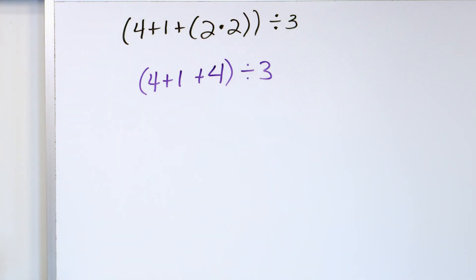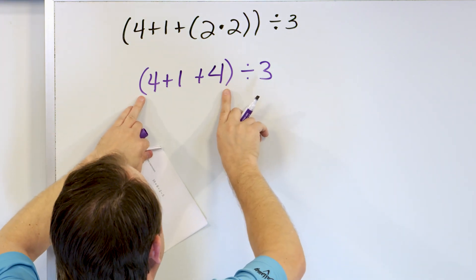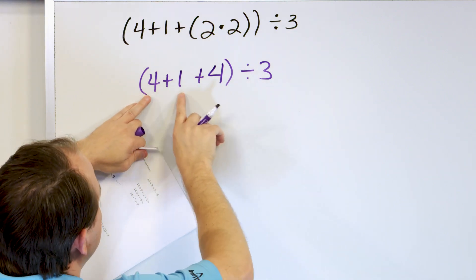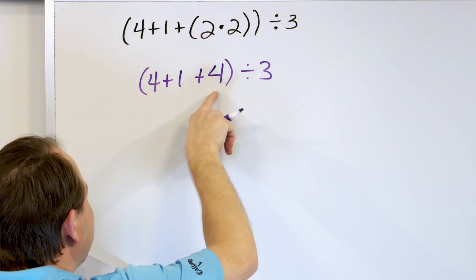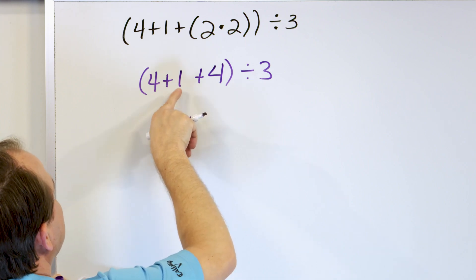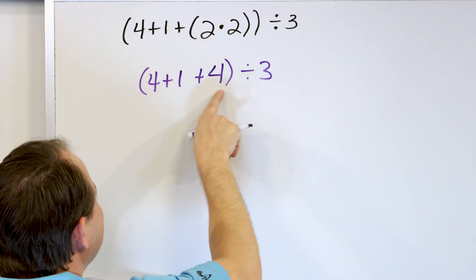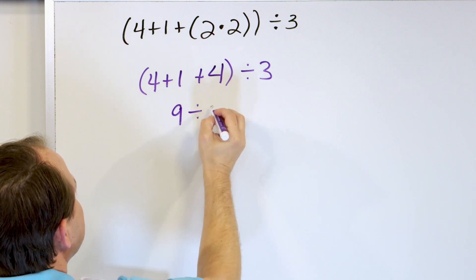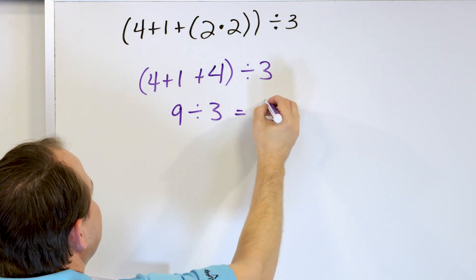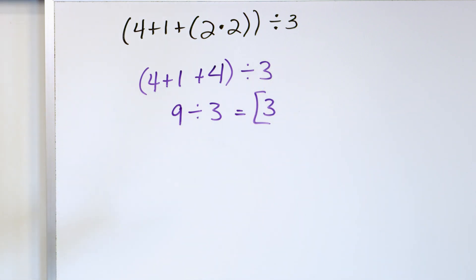All I've done is the multiplication inside the innermost parentheses — everything else is rewritten. Now we still have the outer parentheses, so we do what's inside first. We have a bunch of additions, so we go left to right: 4 plus 1 is 5, and then 5 plus 4 is 9. So this all becomes 9 divided by 3. 9 divided by 3 is 3, and that is the final answer.